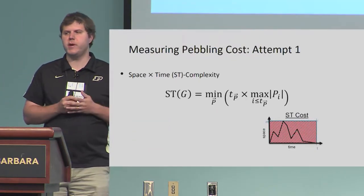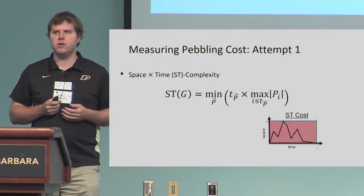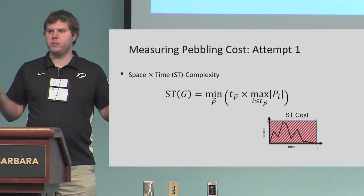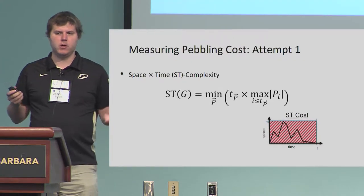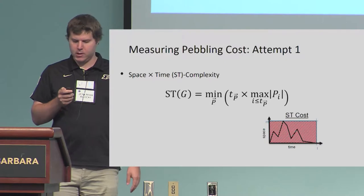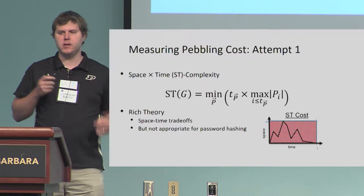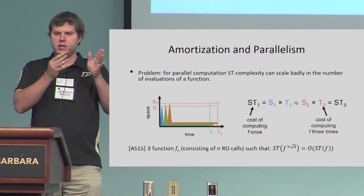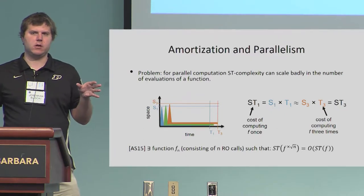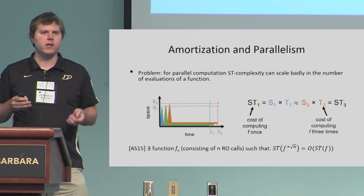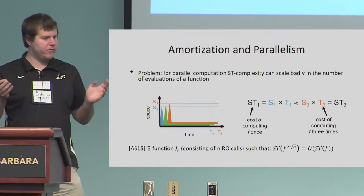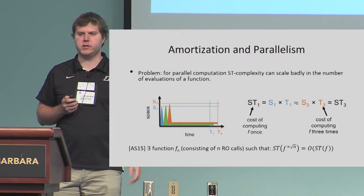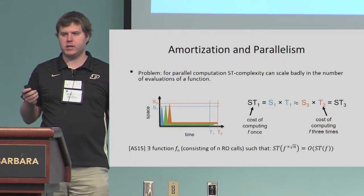The important question is how do we measure the cost of a pebbling, and there are a couple different approaches. One initial attempt is space-time complexity: the maximum number of pebbles on the graph at any point in time multiplied by total time — maximum space used times time. The problem is that space-time complexity doesn't amortize nicely. If we have a computation that requires a lot of space initially and then runs for a long time without much space, an attacker computing multiple instances can interleave them such that the space-time complexity of computing multiple instances is roughly the same as computing just one instance.